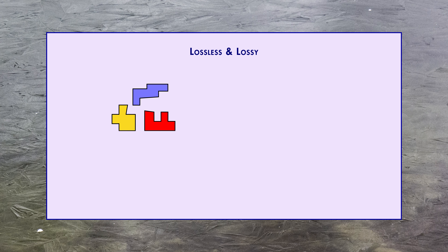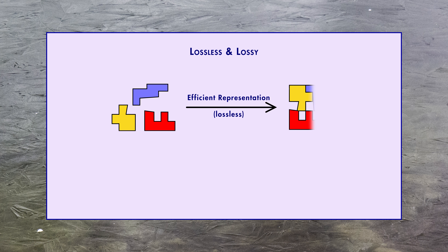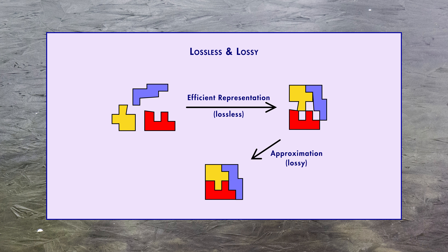The solution to all of this is data compression. How compression works is a whole other video — actually a whole other series of videos — but basically the data is represented more efficiently, and then some approximation and simplification is done to cram it into an even smaller space. Note that these are two steps: efficient representation and approximation. Computer data, which has to be retrieved perfectly, only uses the first part — the more efficient representation. That's called lossless compression.